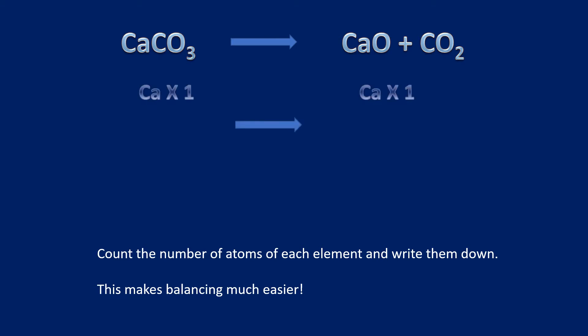On the left we have one calcium and on the right we have one calcium. On the left we have one carbon and on the right we have one carbon. On the left we have three oxygens and on the right we have three oxygens. So that is already balanced — that equation did not require any balancing.